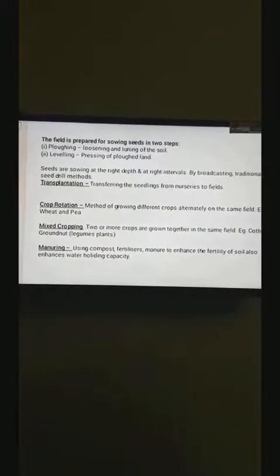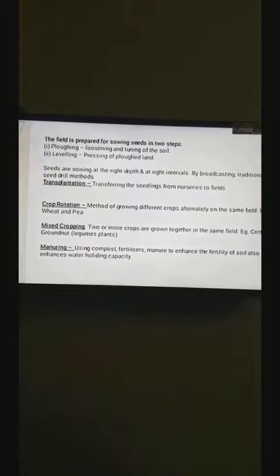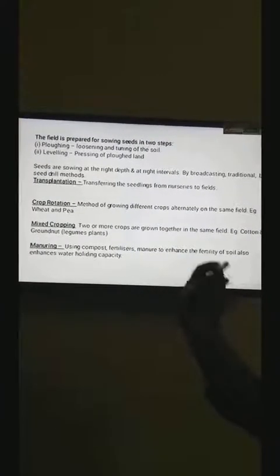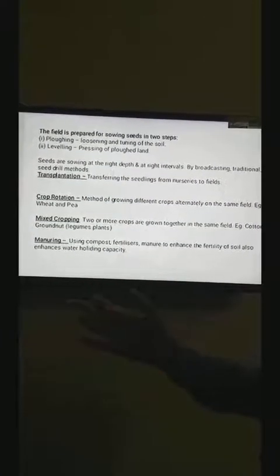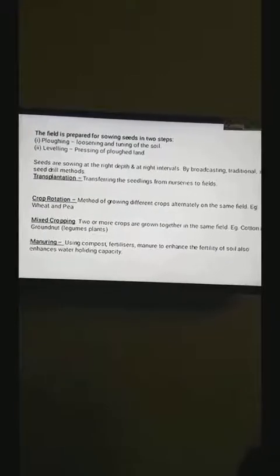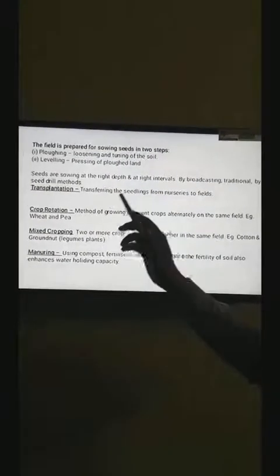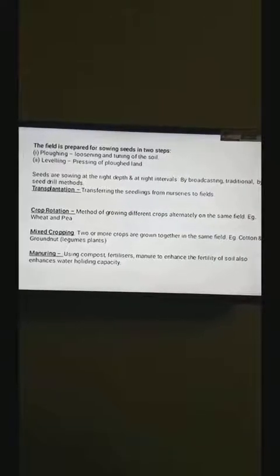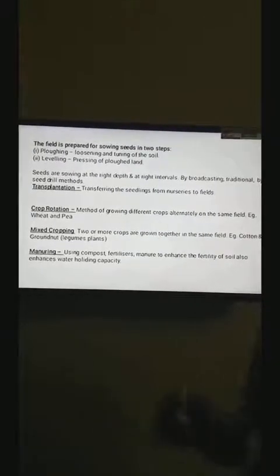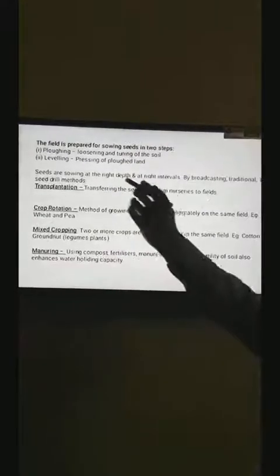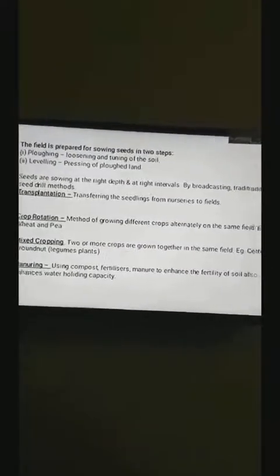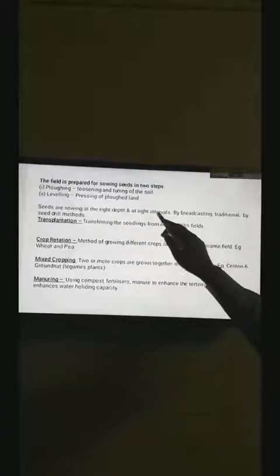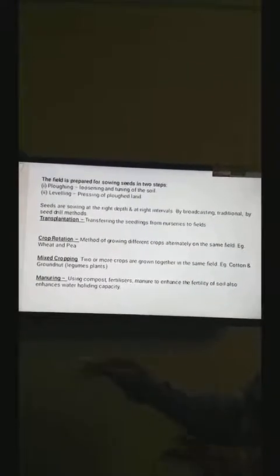The second step is selection and sowing of seeds. For this, the precaution should be taken that only clean, healthy and disease-free seeds should be selected. And seeds should be treated with fungicides. Sowing of seeds should be done very carefully. At the right depth, neither too shallow nor too deep. And second, at right intervals so that they get proper air, sunlight and nutrients.